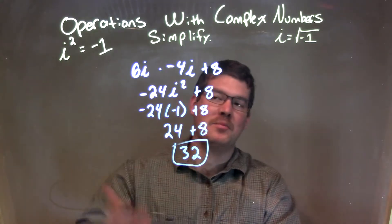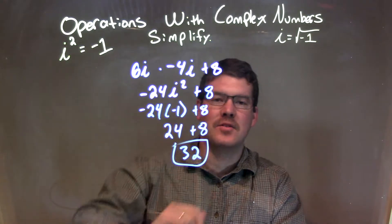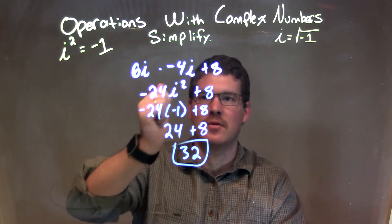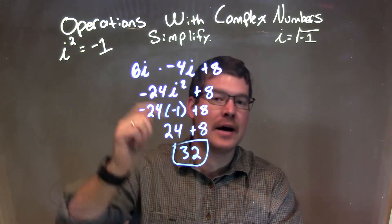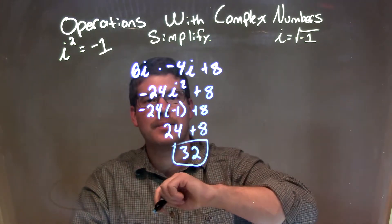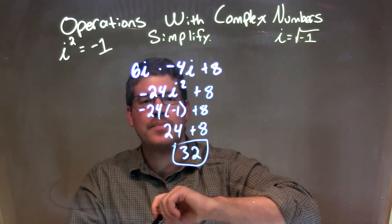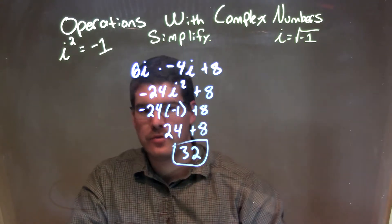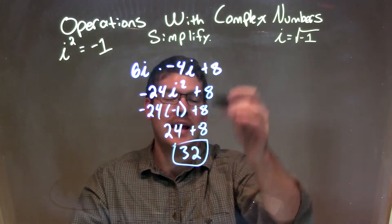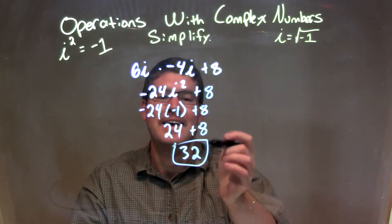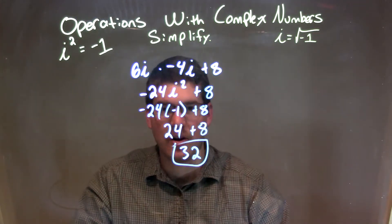So let's recap. 6i times negative 4i plus 8. Well, 6i times negative 4i is negative 24i squared. Bring down the plus 8. i squared becomes negative 1, and negative 1 times negative 24 is positive 24. 24 plus 8, which we've been bringing down the whole time, is 32, and that is my final answer.